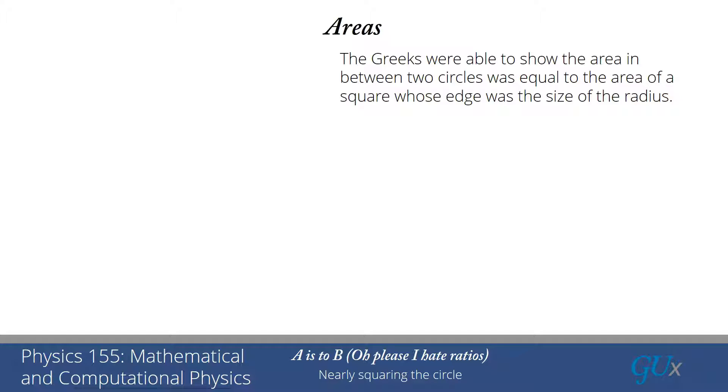They were able to find something where they could show that the area between two circles was equal to the area of a square that had an edge the size of the radius, and this is a quite interesting proof that they have, and we're going to go through the details of it.